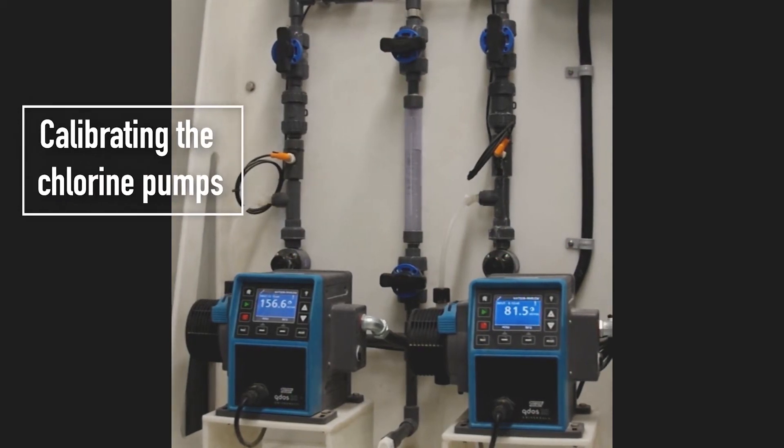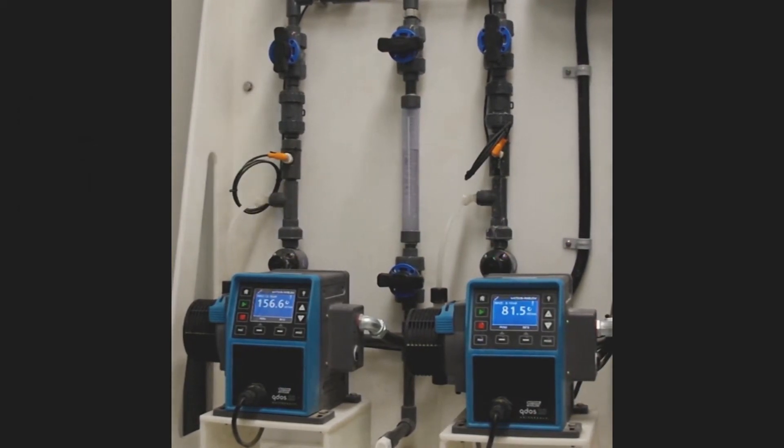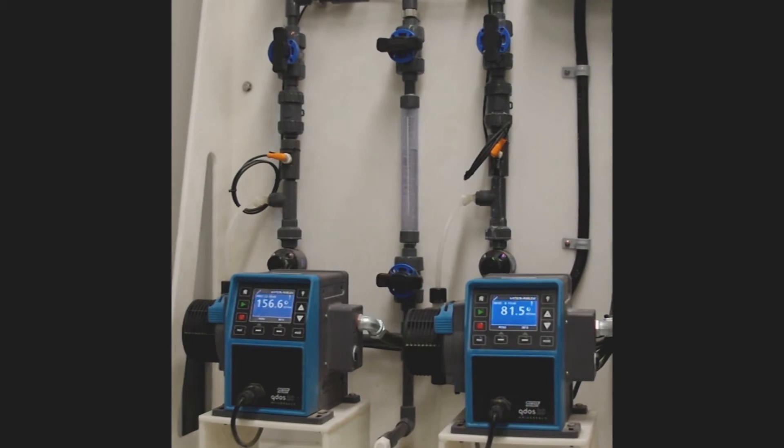Okay, this is calibrating the chlorine pumps. In order to calibrate the chlorine pumps, the first thing that you need to do is, in the office on the computer, both pumps have to be in hand mode. Now you can see here that they've been put into hand mode.